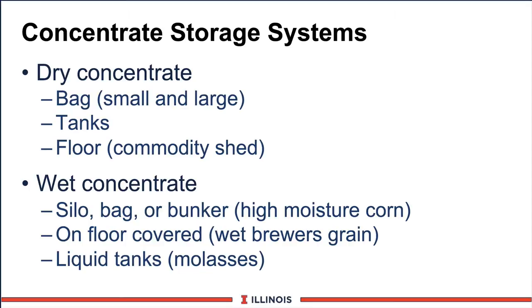We can also have concentrates that are wet. The most common would be high-moisture corn and high-moisture barley, which we can store much like silages — in upright silos, bags, or bunkers. Another wet feed would be wet brewer's grain and wet distiller's grain, usually stored on the floor and in many cases covered with some type of tarp or plastic, trying to minimize mold and losses due to fermentation and spoilage. Another newer system is the liquid tank, coming on much larger farms, primarily carrying molasses blended with urea, minerals, and other nutrients that are dispensed and pumped onto the total mix ration using motors, done very effectively and efficiently.